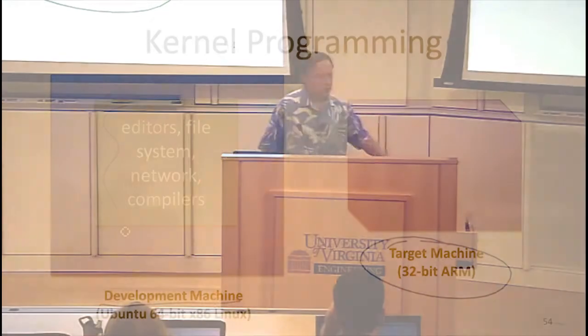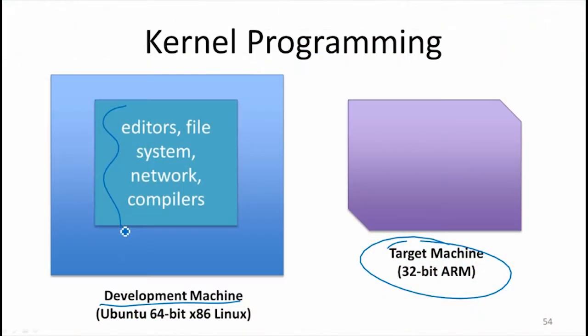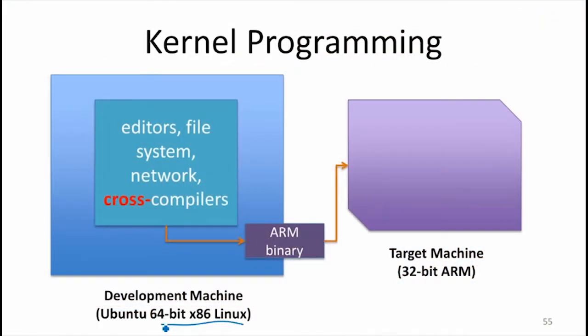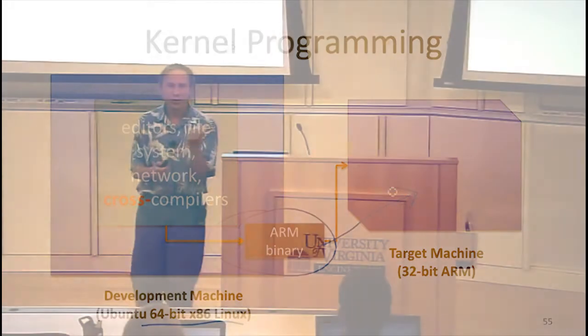You do all your development on a host machine and produce a binary to run on the target machine. What you need for that is a cross-compiler — a compiler that runs on one machine and produces a binary targeted to another machine. There's no reason the compiler on your Ubuntu Intel x86 machine can't produce instructions that will run on some other processor, and that's what we're going to do.